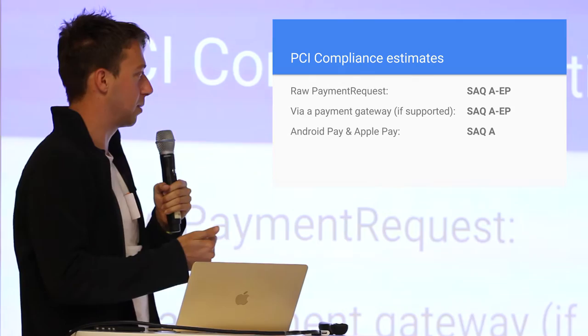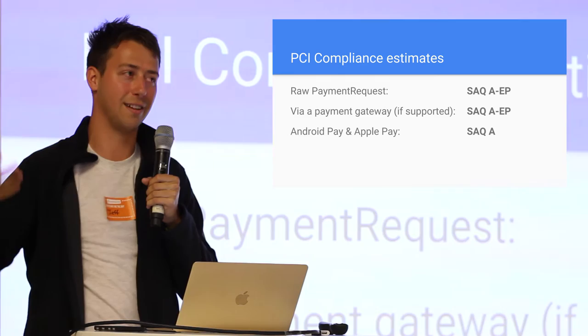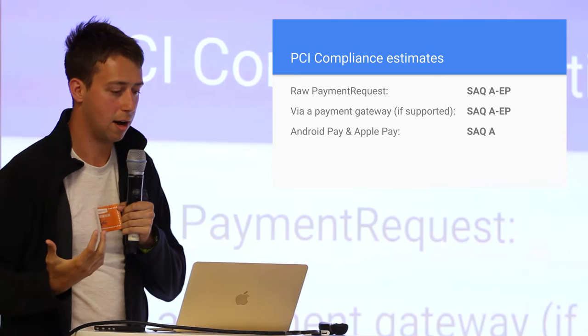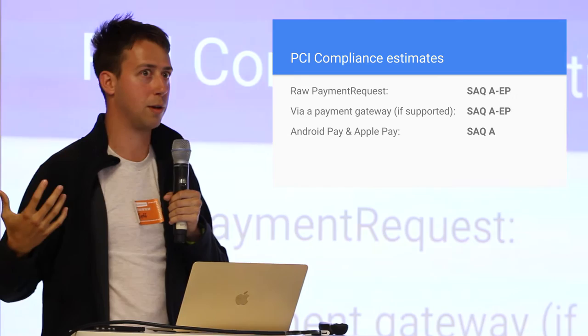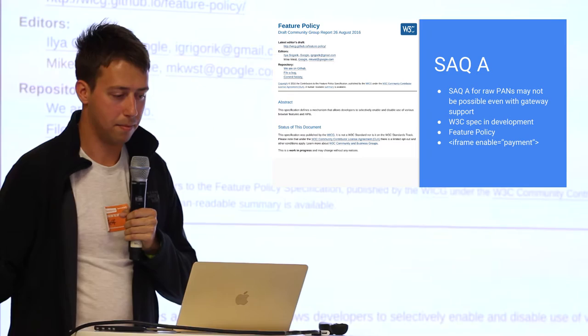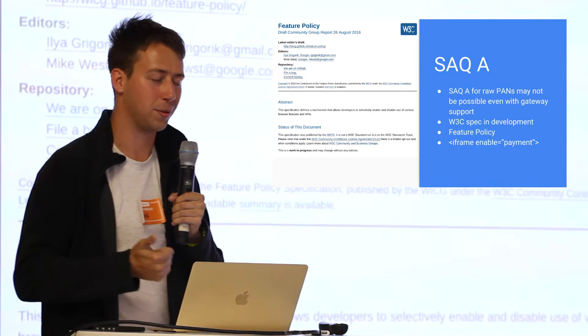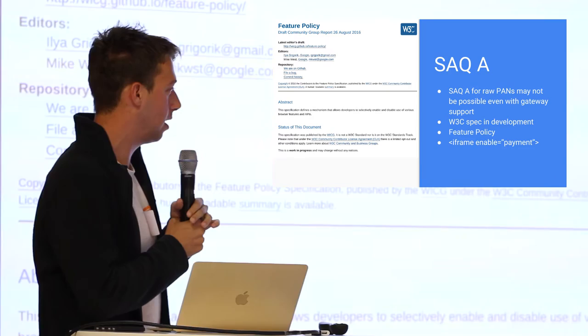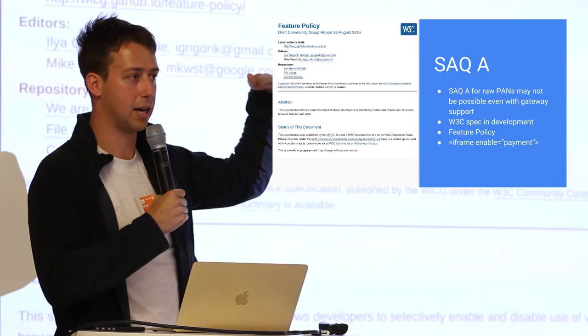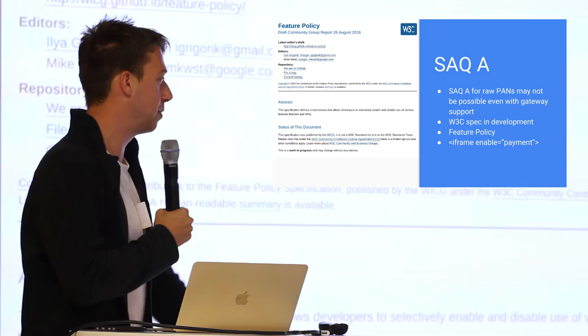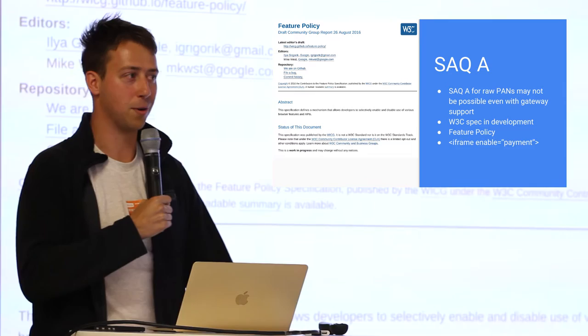The raw Payment Request — even if gateways try to support it — will likely not achieve the SAQ A level because raw payment information flows through your origin. Once Android Pay and Apple Pay are ready for production, they should allow you to achieve SAQ A. There's a spec called Feature Policy that might enable SAQ A — it allows you to authorize an iframe to initiate the payment request. Right now, payment request must come from the top level of your domain, but this spec would allow iframe initiation. So if you want SAQ A compliance with payment requests, keep your eyes on that spec.